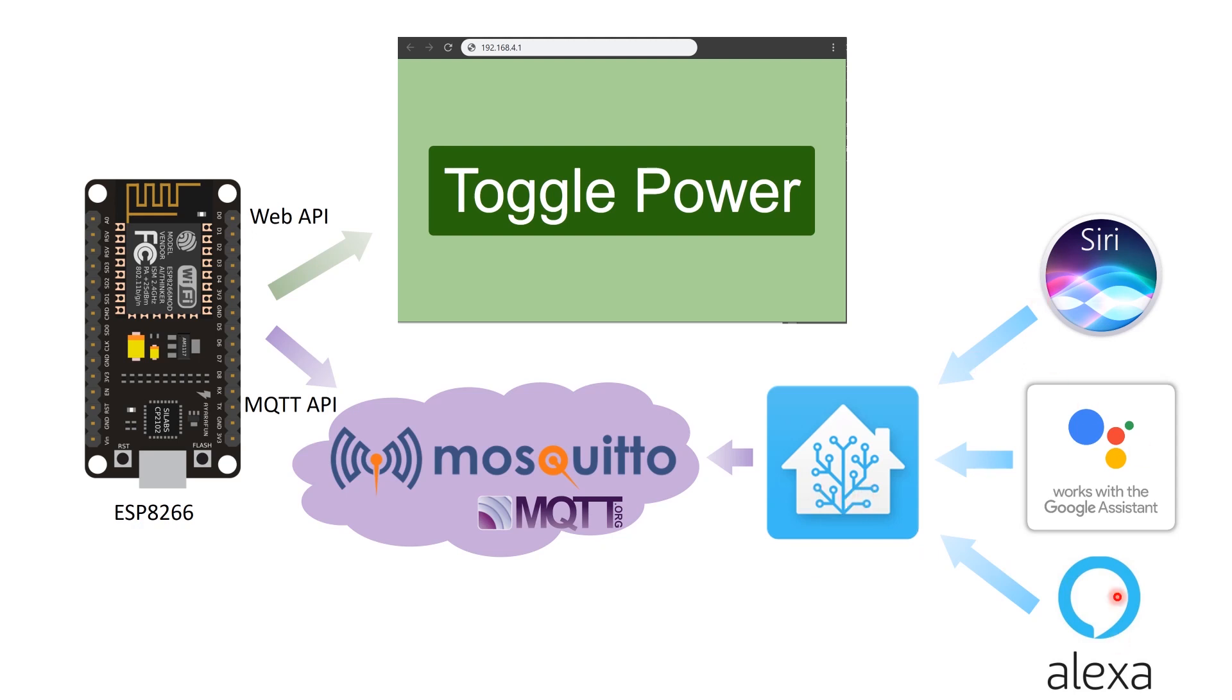So basically, I'm just going to configure a switch on Home Assistant that just subscribes to the topic on the Mosquitto server. It's the same topic that I'm going to use to control my ESP8266, which actually controls the transistor.